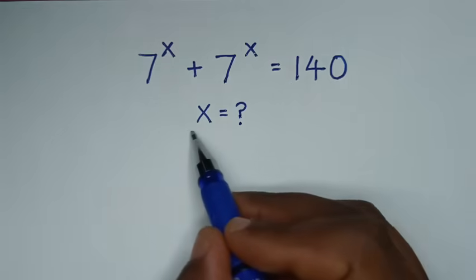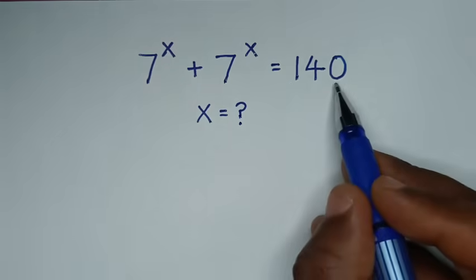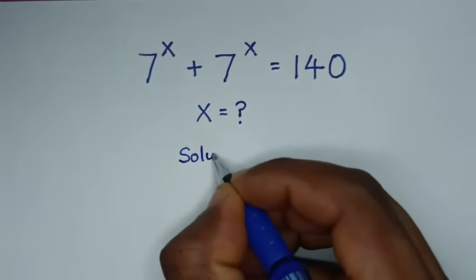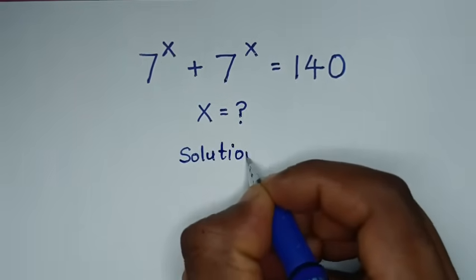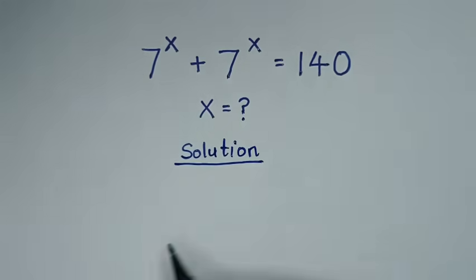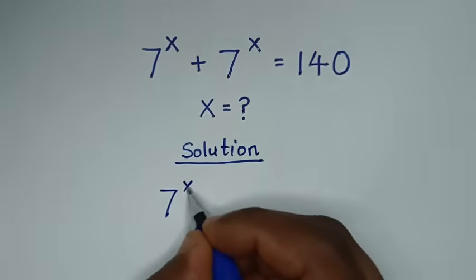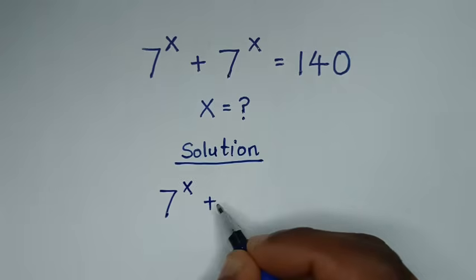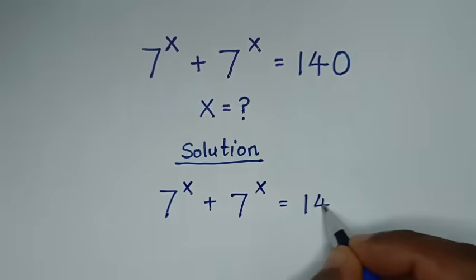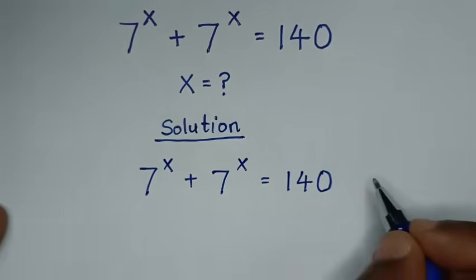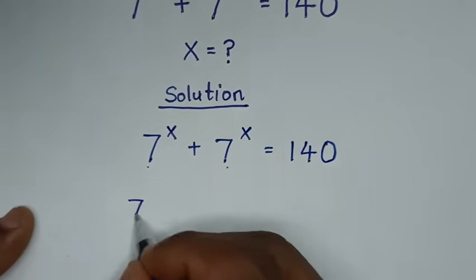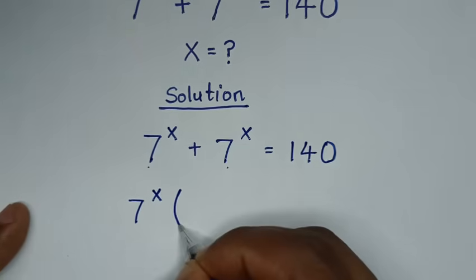To find the value of x from this equation, our problem is 7 power of x plus 7 power of x is equal to 140. In the first step, 7 power of x is common, so we'll take 7 power of x out of the bracket.